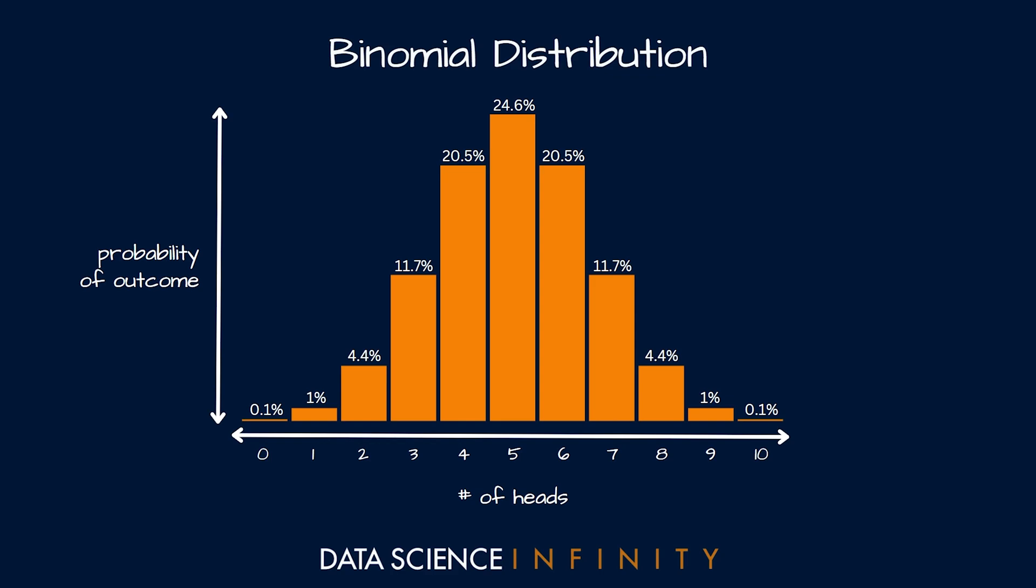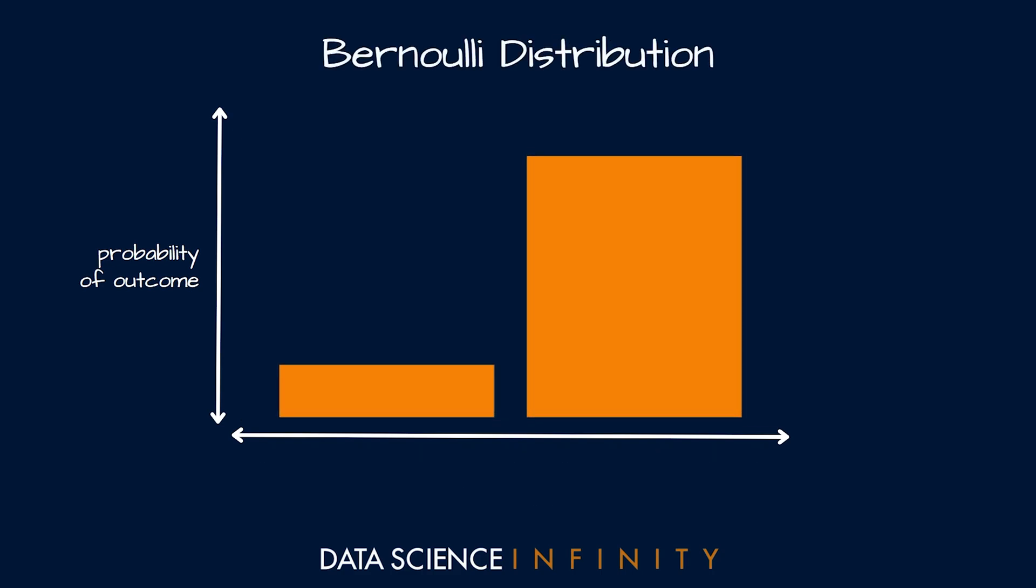Here our experiment was measuring the probability of different outcomes of coin flips. As an example, we could use this knowledge to assess whether a coin was fair or not, as a fair coin would stick to this distribution and an unfair coin would not. Anyway, let's keep moving and the next type of distribution that we will discuss is what is known as the Bernoulli distribution, which can actually just be thought of as a special case of the binomial distribution that we just looked at.